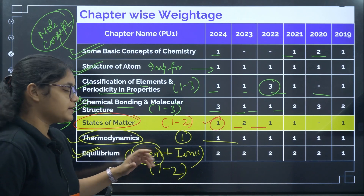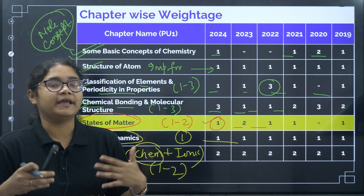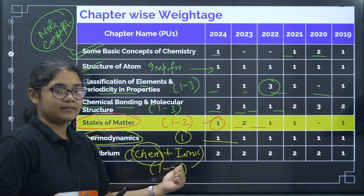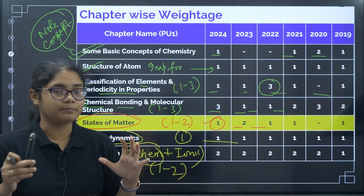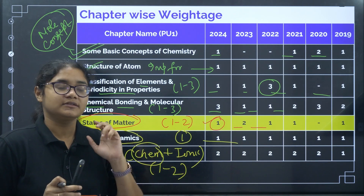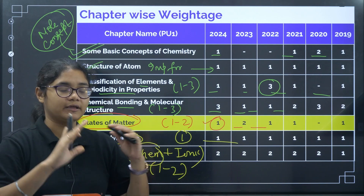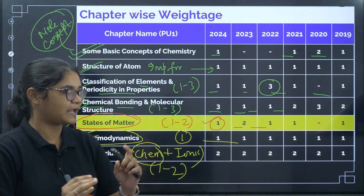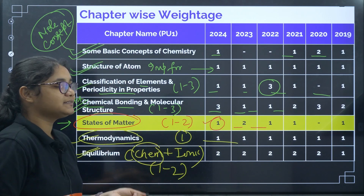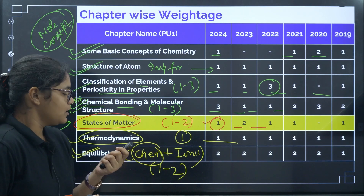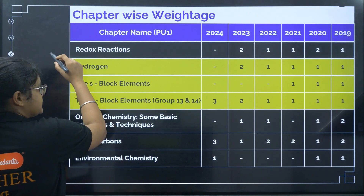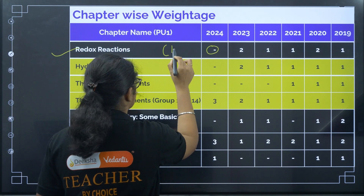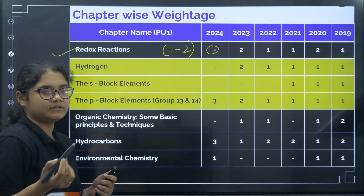It is now August month, and you have almost eight to nine months for this exam, so definitely you should not leave anything. Prepare your preparation right now. Give full attention to your 12th syllabus so that later you will have some buffer time to revise these 11 PU1 chapters. Coming to Redox Reaction — last year there was no question, but you can almost expect one to two easy questions from this chapter.